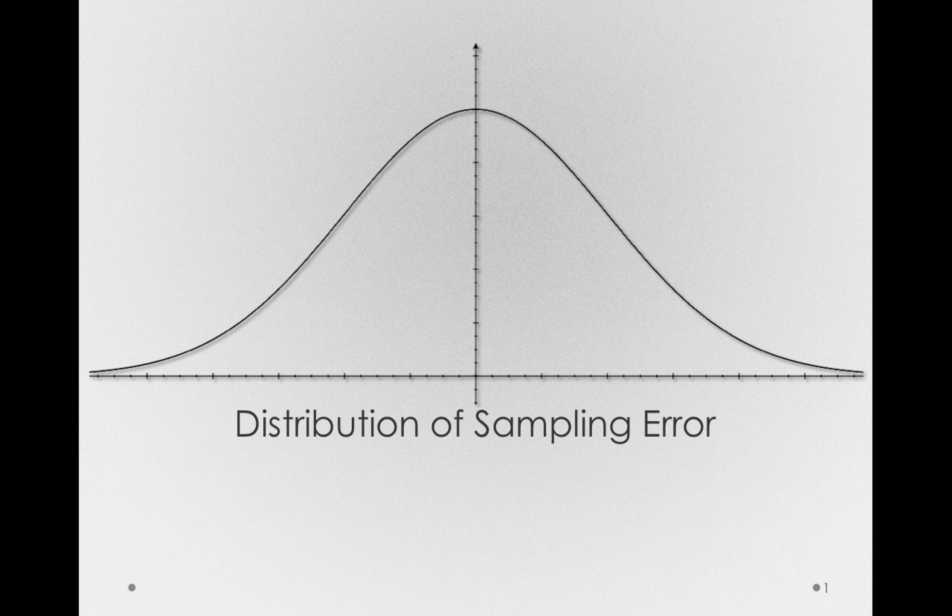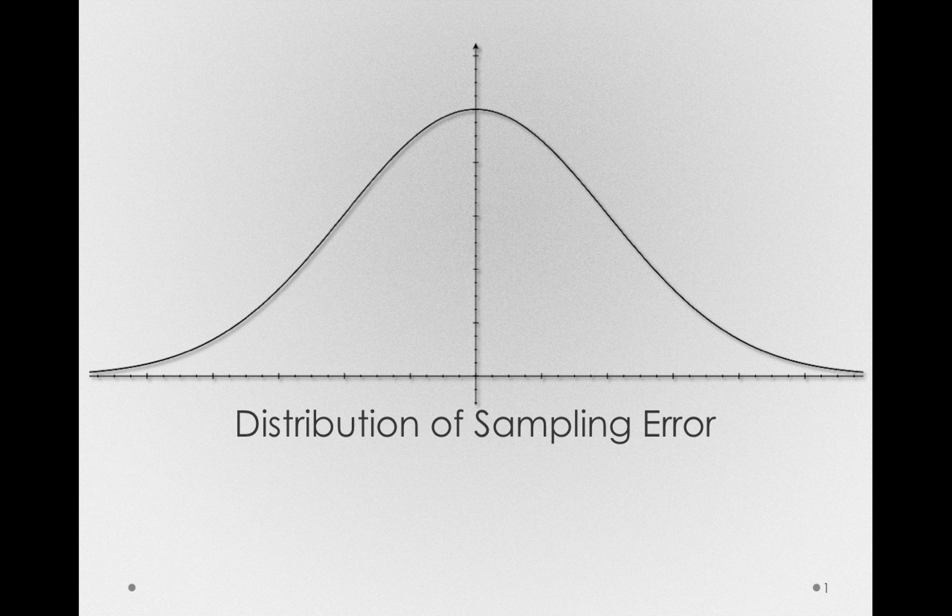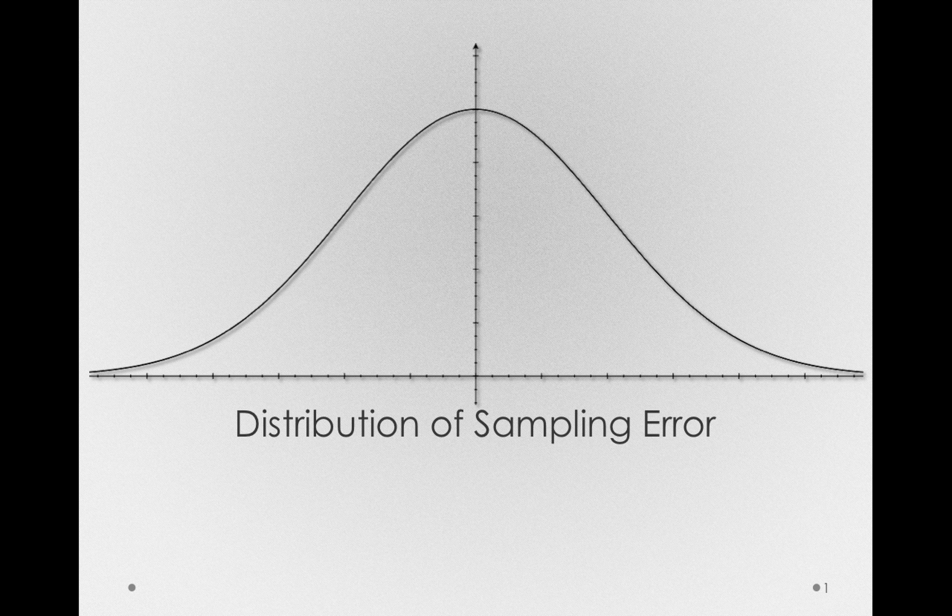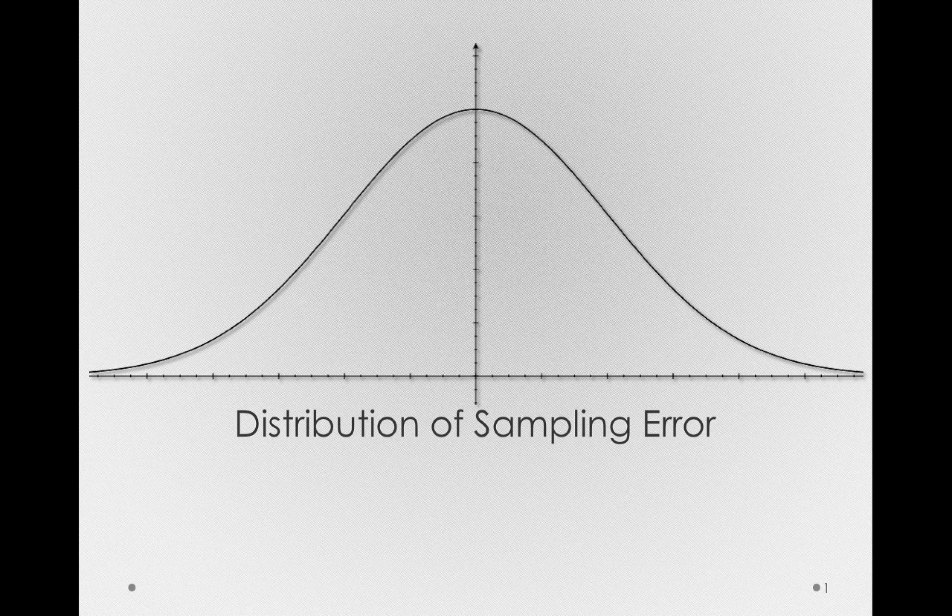Suppose we took a sample and treated them in some way, and got a sample mean of 140. Well, that seems pretty unlikely to happen if the thing we did to our sample had no effect. We would probably be more inclined to say that whatever treatment we applied caused some sort of difference.